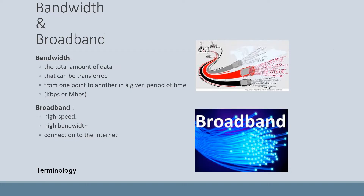Some of the terminology you need to know. Bandwidth is the total amount of data that can be transferred from one point to another in a given period of time. The higher the bandwidth, the more data can go through. You can think of it as a water pipe — a big fat pipe lets a lot of water through, while a small pipe allows far less. In a network, bandwidth is measured in kilobits per second or megabits per second.